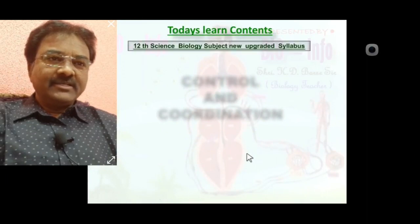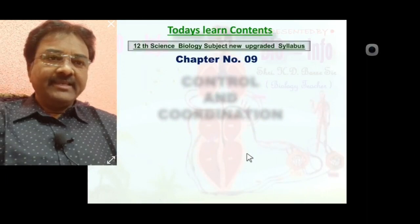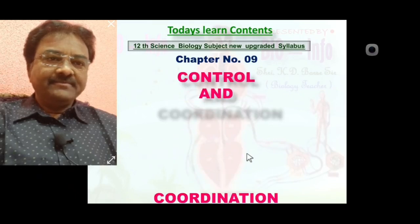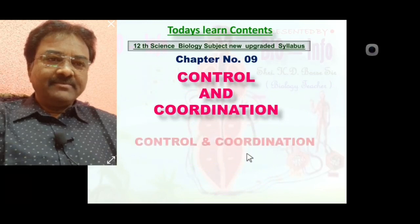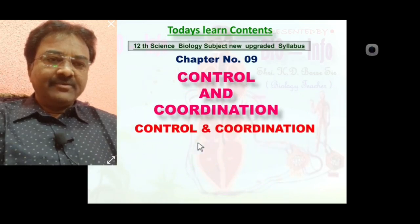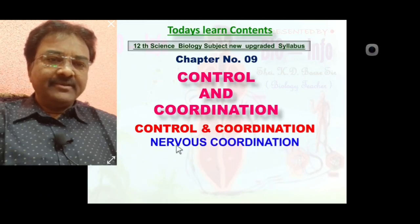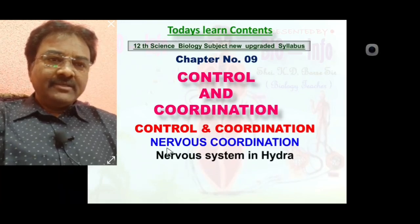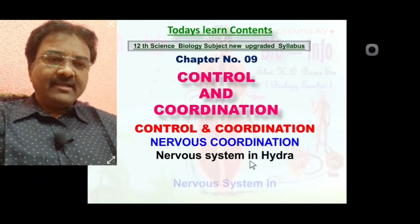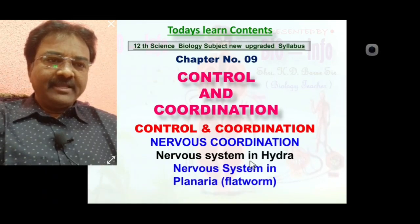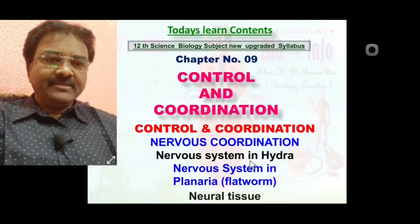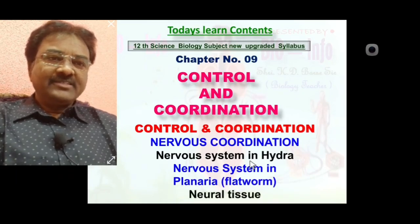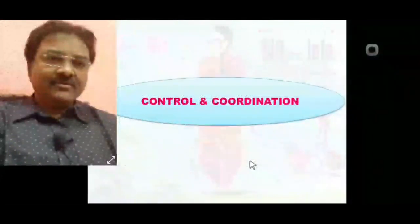Today we are going to learn 12th science biology syllabus content, chapter number 9: Control and Coordination. The content concepts we will cover are: what is control and coordination, the concept of control and coordination, nervous coordination, nervous system in hydra, nervous system in planaria flatworm, and nervous tissue.